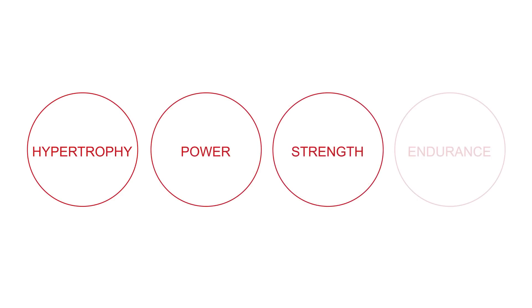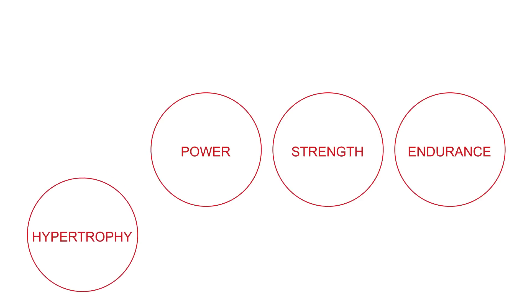Hypertrophy — gains in muscle size — becomes most important during early adolescence, usually after PHV, when an abundance of growth hormones adds significant value to the training. The model considers hypertrophy an extremely minimal part of early development and of less importance than power, strength and endurance in early adulthood.